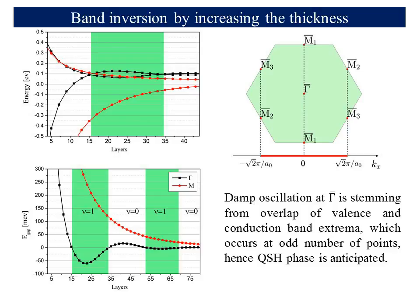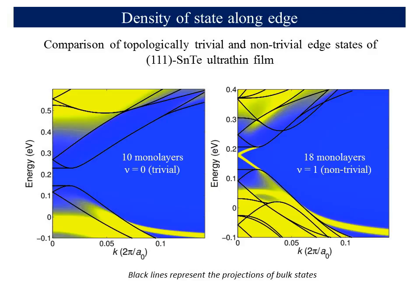Ultimately, to endorse these calculations, we explicitly analyzed the 110 edge spectral function of 111 tin telluride. These calculations were performed using the recursive Green's function method. For a slab consisting of 10 monolayers, a trivial phase is expected, which can be seen as a wide gap dividing the valence and conduction bands. In contrast, for an 18 monolayer slab, direct crossing of edge states appears in the bulk gap, which is the hallmark of the quantum spin Hall phase, and is in agreement with Z2 calculations.